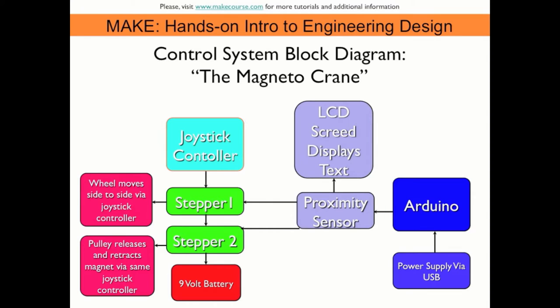The stepper motors are being powered through separate rails through a 9-volt battery. When someone is close enough in proximity, 50 centimeters, to the proximity sensor, the LCD screen backlight turns on and it displays a text, and the stepper motors also work with the proximity sensor.